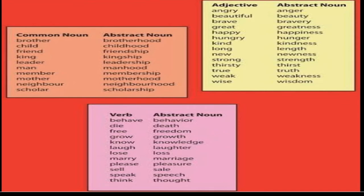If you see this purple box, there is a list of verbs and we can form abstract nouns from these verbs. For example, behave, behaviour, die, death, free, freedom, grow, growth, know, knowledge, laugh, laughter and there are many other verbs which can be changed into abstract nouns.